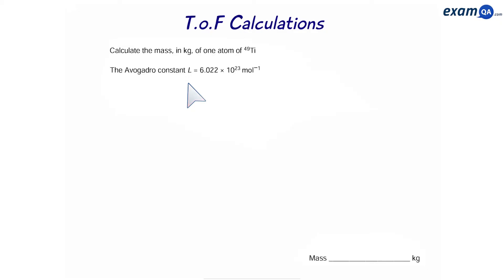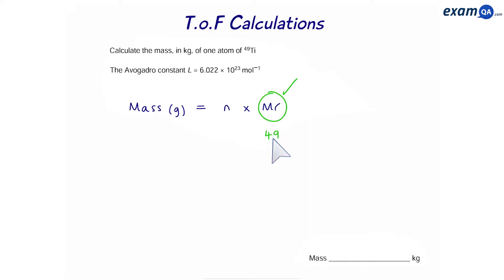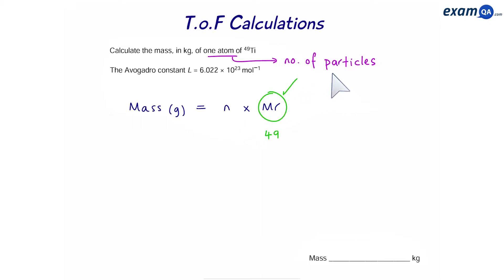In this part, we have to calculate the mass in kilograms of one atom of titanium-49. We know to find the mass, all we have to do is moles times Mr. We've already been given the Mr — it's 49. However, we haven't been given the moles. Instead, we've been given the number of particles. In this case, we have one atom.